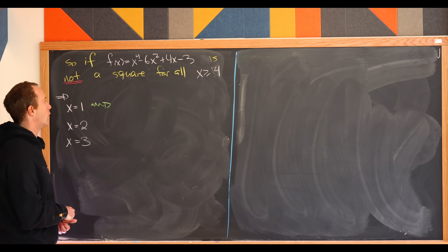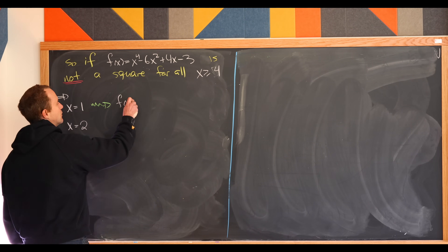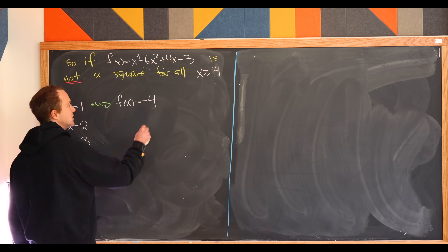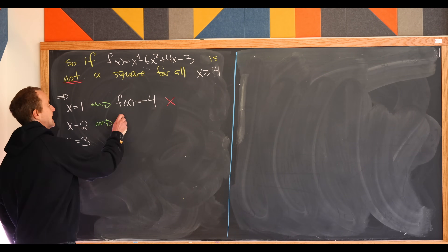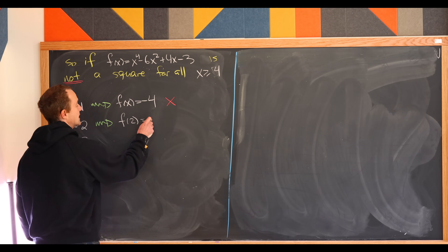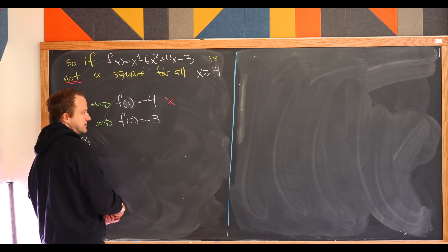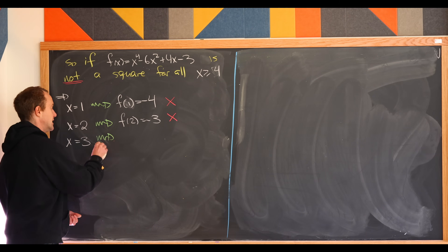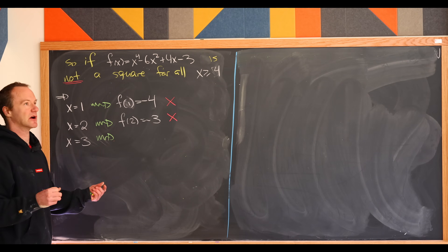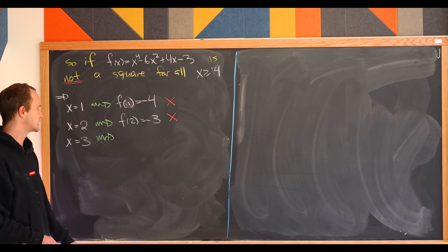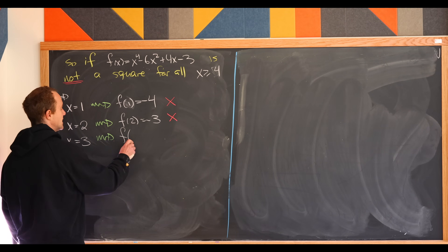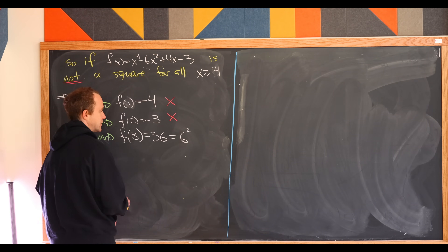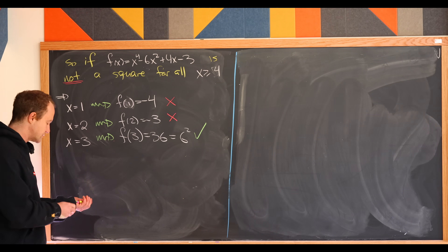Plugging x equals 1 into f(x) gives negative 4, which is not a perfect square over the integers. Plugging in x equals 2 gives negative 3, which is not a perfect square either. Our only hope is x equals 3, and luckily f(3) equals 36, which is clearly 6 squared. So x equals 3 does give a perfect square.